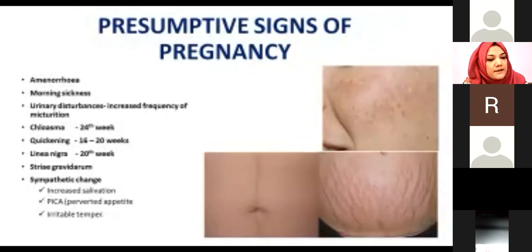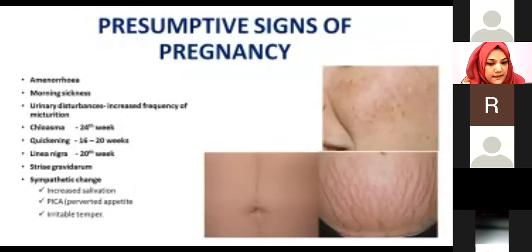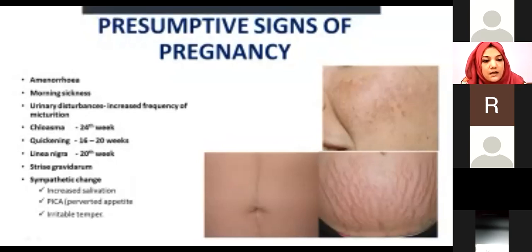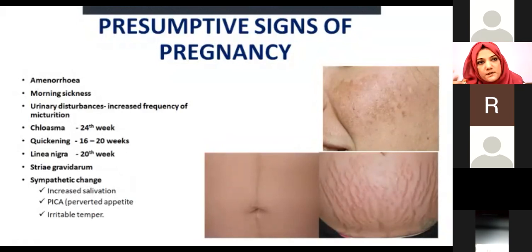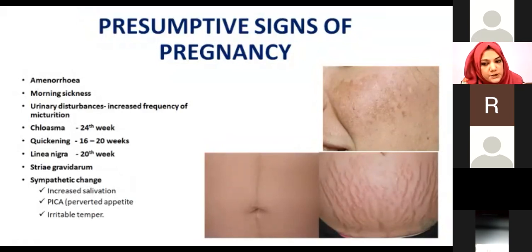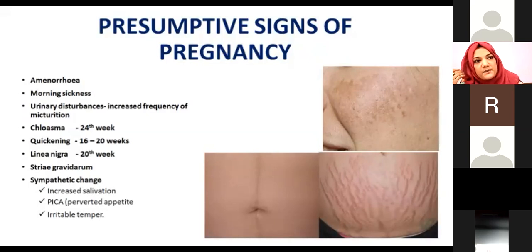Then there is pigmentation — hyperpigmentation on the body. Two terms are used: linea nigra and striae gravidarum. Linea nigra refers to black lines extending from the xiphisternum down to the symphysis pubis, which become more prominent as the pregnancy progresses. Striae gravidarum appear as pink striae due to stretching of the abdominal wall, and post-delivery they become silvery striae, indicating a previous pregnancy.